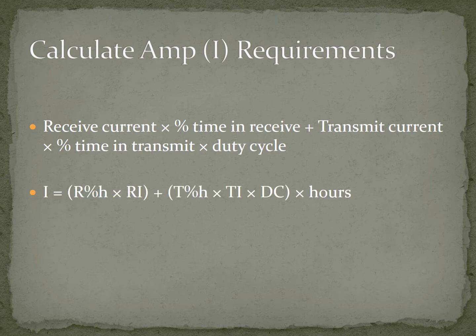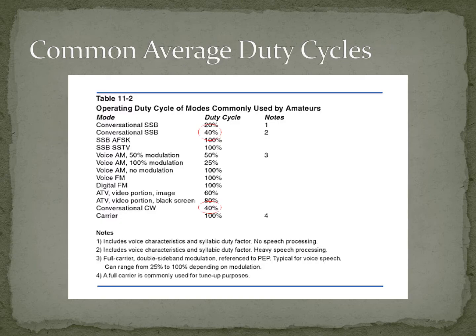For those of you that like algebra, this is the algebraic equation we're talking about, but I am going to make it a lot more simple for the rest of us mere mortals. The first thing we need to do is look at common average duty cycles. This is a page from the ARRL handbook that looked at conversational sideband duty cycles and conversational CW duty cycles — and those are about 40% of the time.